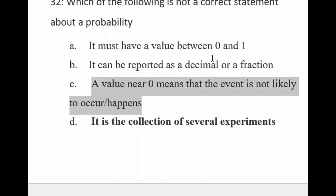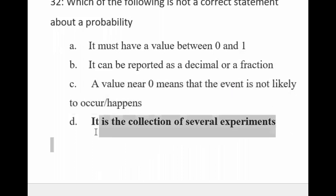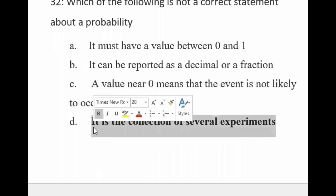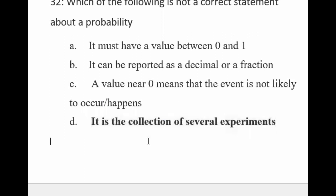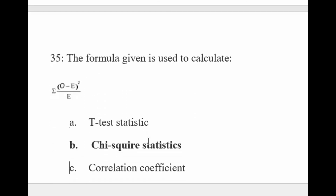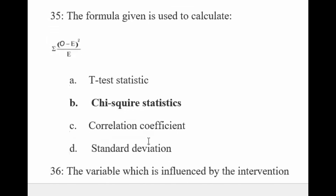The formula given is used to calculate probability in an experiment. The formula is summation of (O minus E) whole square divided by E. Here O indicates observed frequency and E indicates expected frequency. This observed and expected frequency formula is always used in Chi-square.